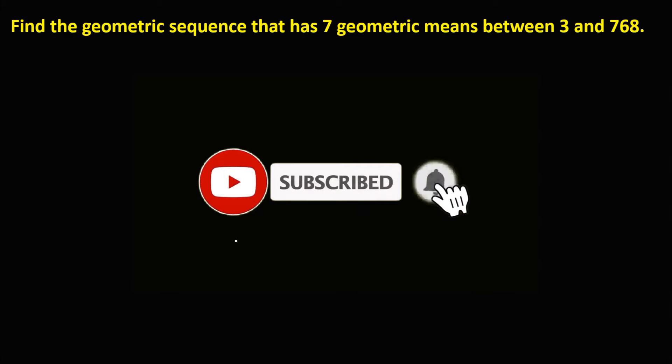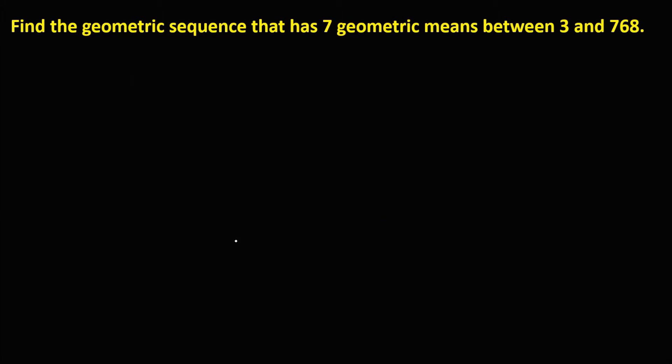So let's have this problem. Find the geometric sequence that has 7 geometric means between 3 and 768.